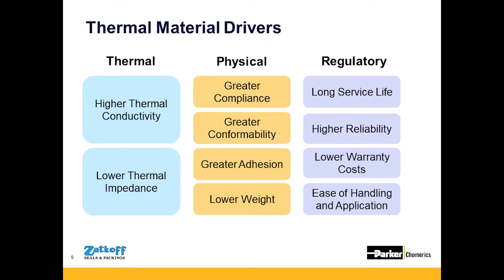Across all industries and nearly all applications, we see common drivers for thermal interface materials. As boards get hotter and enclosures get smaller, higher performance density and greater ease of application drive continuous improvement. Typically, customers want the highest thermal conductivity material, which correlates to the lowest thermal impedance. But just going for the best thermal material doesn't always meet application needs — there are other physical and regulatory properties to consider, including conformability to wet out on each surface and how the material will be applied in final manufacturing, whether manually or through automation.